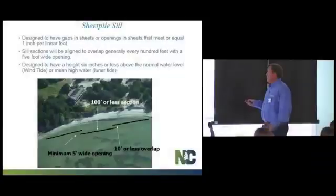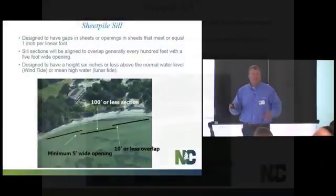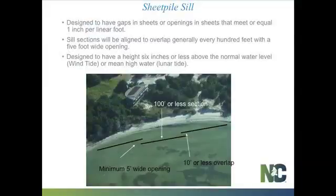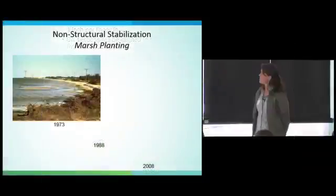There are different types of wave attenuation structures and different types of living shorelines. In some cases, you can simply plant a living shoreline without needing a wave attenuation structure at all. As Steve mentions, not all living shorelines require a sill or wave attenuation structure. Erin Fleckenstein with the North Carolina Coastal Federation shares an example of using only marsh plantings for shoreline stabilization.